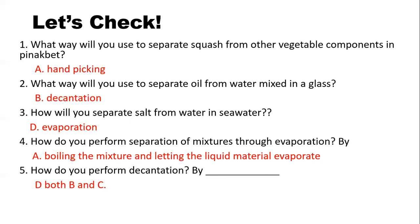Number 3: How will you separate salt from water in seawater? The correct answer is D, Evaporation. Number 4: How do you perform separation of mixtures through evaporation? The correct answer is A — boiling the mixture and letting the liquid material evaporate. And number 5: How do you perform decantation? The correct answer is D, Both B and C.